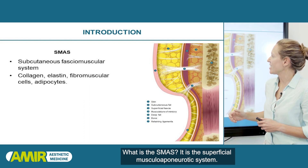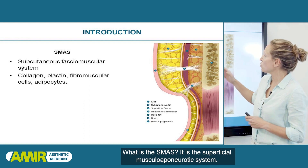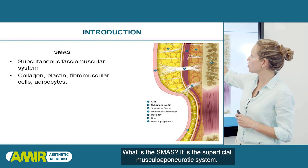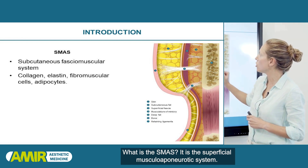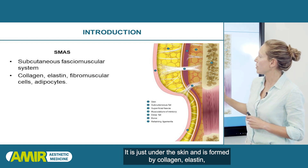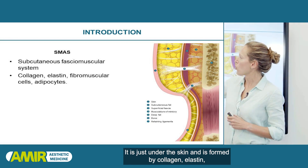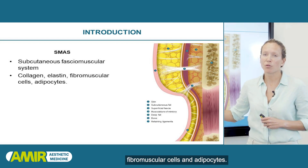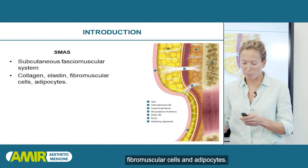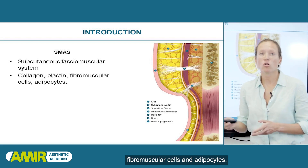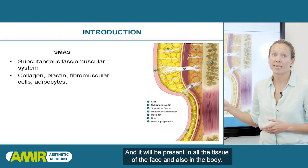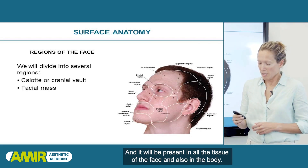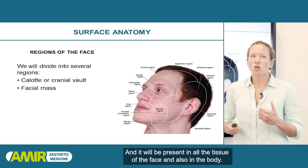What is the SMAS? It is the superficial musculo-aponeurotic system. It is just under the skin and is formed by collagen, elastin, fibromuscular cells, and adipocytes. It will be present in all the tissue of the face and also in the body.